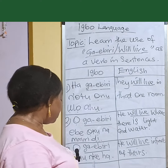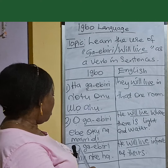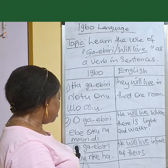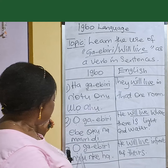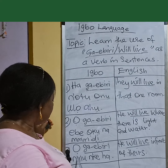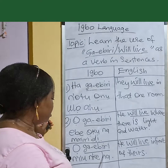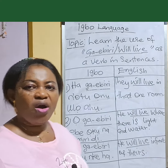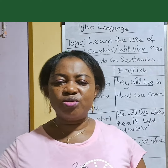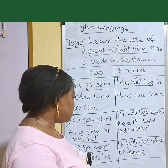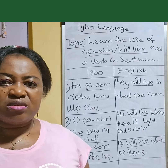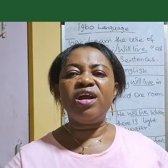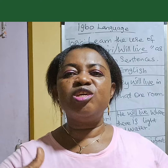The last one says: 'Ha ga ebiri no tu ono aham.' Ha ga ebiri no tu ono aham. Meaning: he will live in front of theirs.